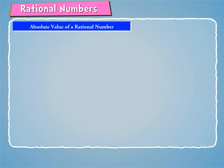Now let us learn about the absolute value of a rational number. We have learnt in earlier class that the absolute value of a rational number is its numerical value without sign.